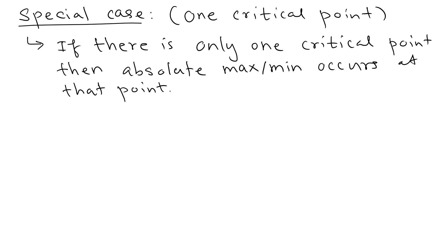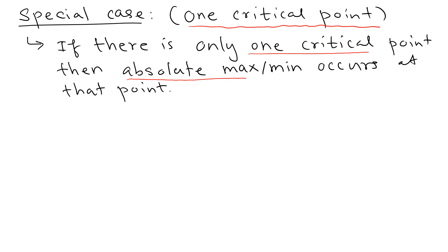But mostly in the problems we're trying to solve, we have a very special case — we only have one critical point. That is the most common situation. If there is only one critical point, then the absolute maximum or minimum, depending on the problem, happens at that critical point. That's a very interesting and important case.